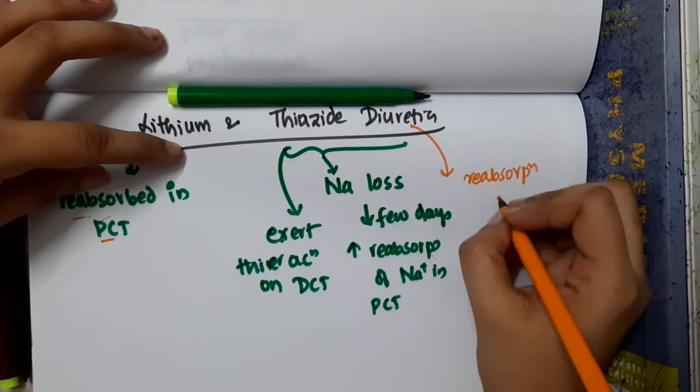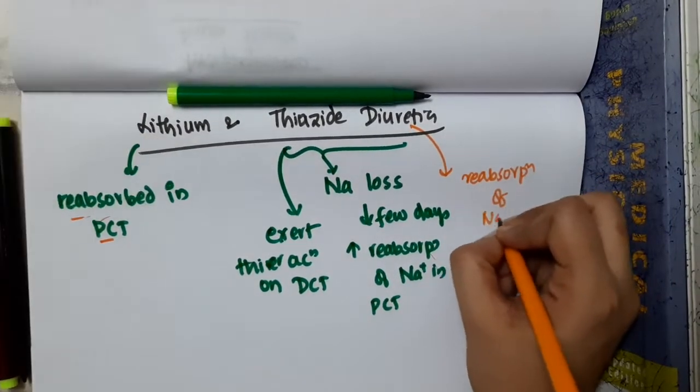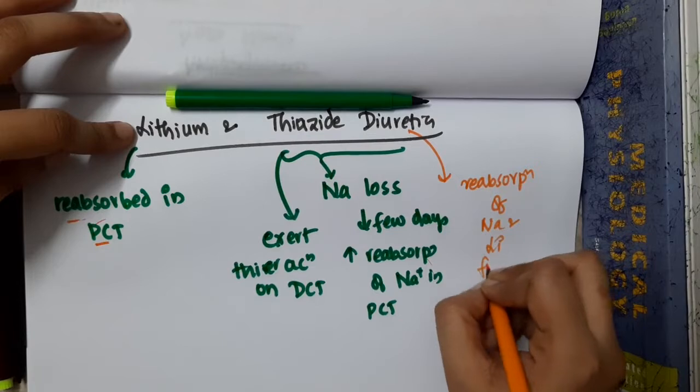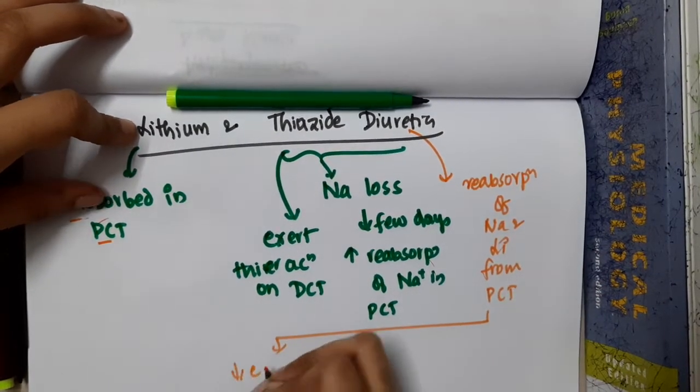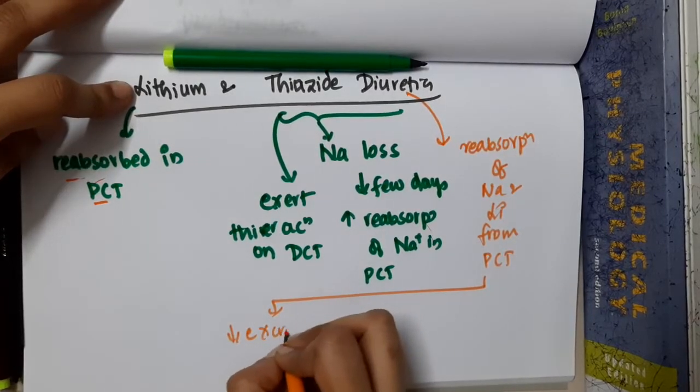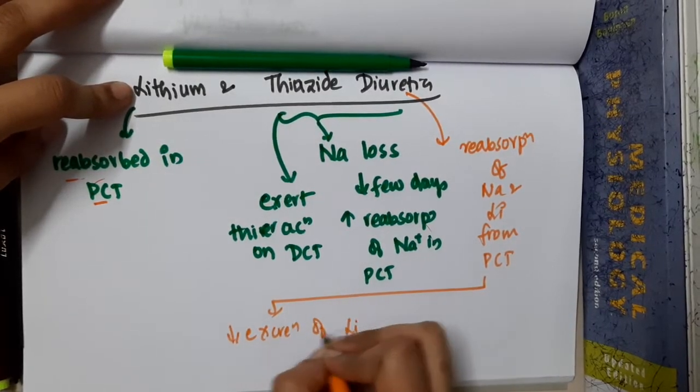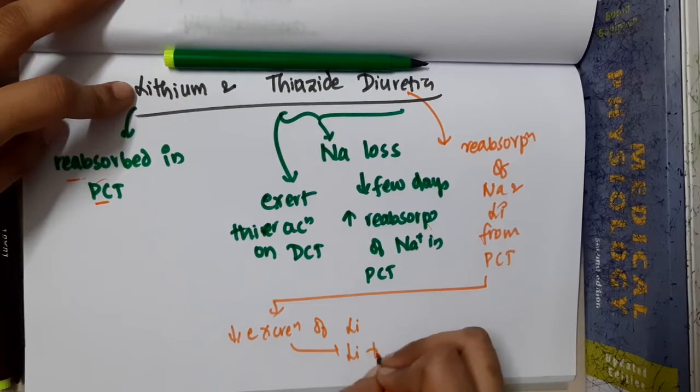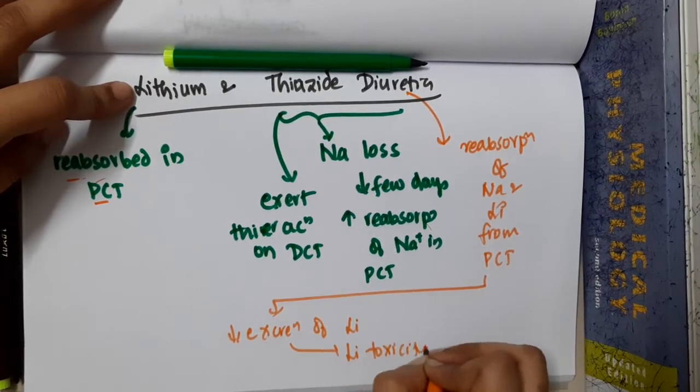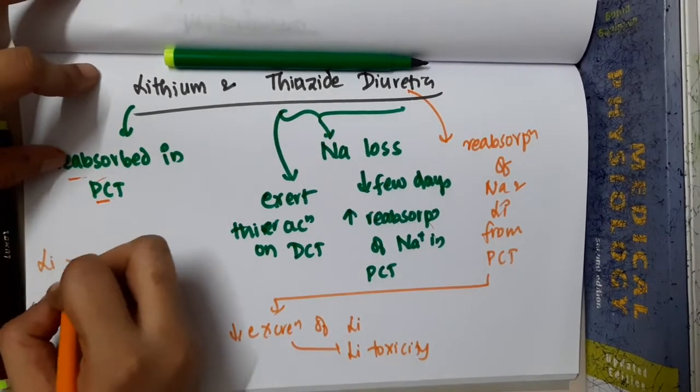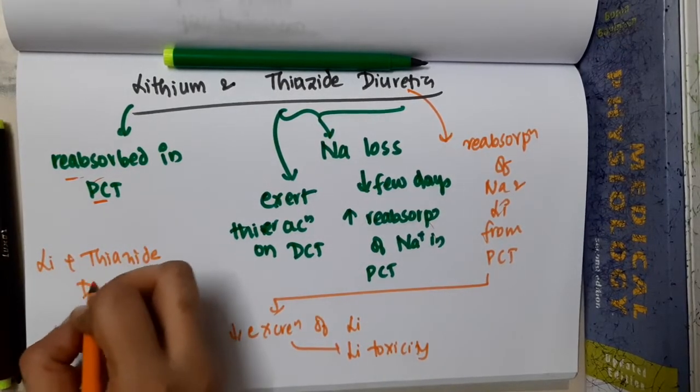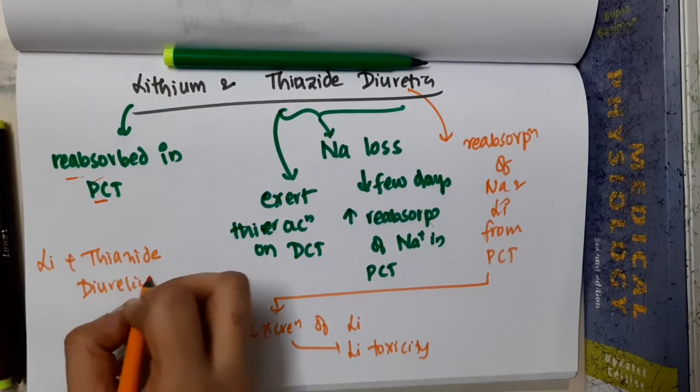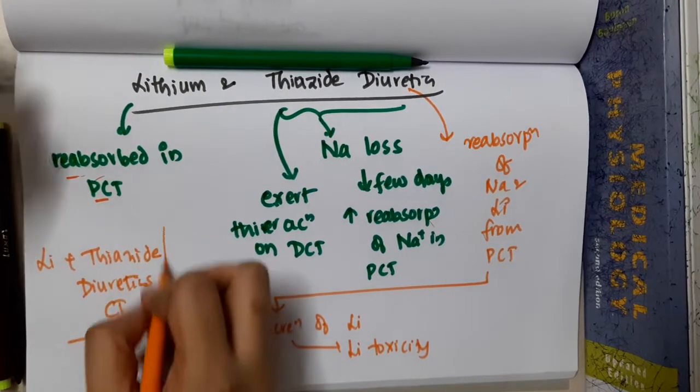Lithium is also treated as sodium, so they will cause reabsorption of sodium and also lithium from proximal convoluted tubule. This will result in decreased excretion of lithium, leading to lithium toxicity. So giving lithium and thiazide diuretics is contraindicated.